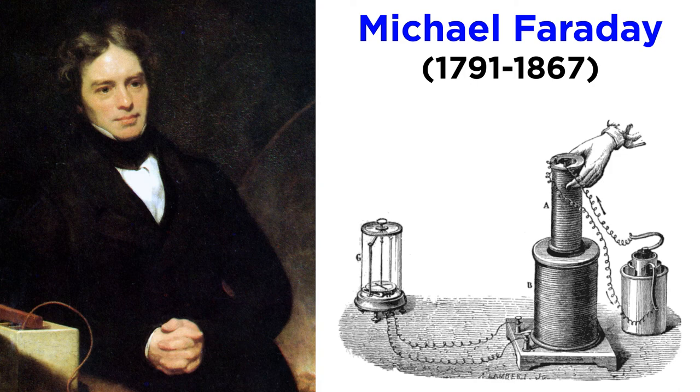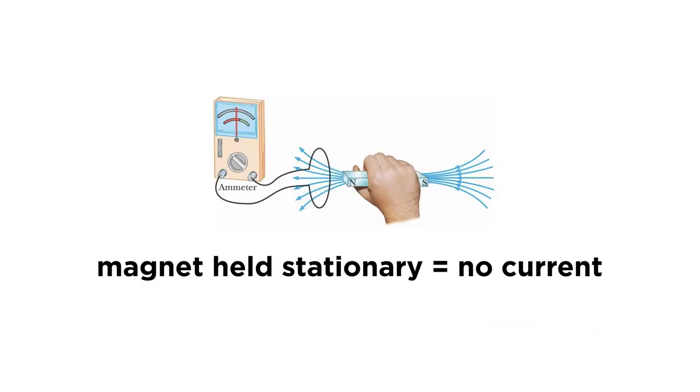Let's consider the physical nature of these principles as Faraday once did in discovering them. A magnetic bar held stationary in the presence of a circuit, or a very long wire, does not produce an electric current within the circuit. There is magnetic flux, but because it is not changing with time, no current is induced.